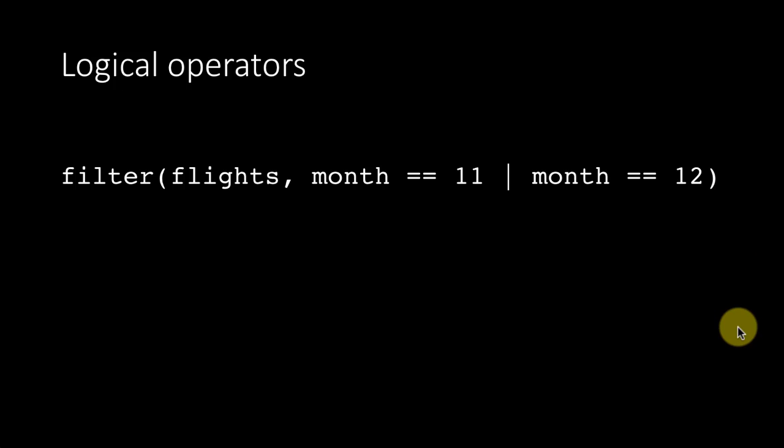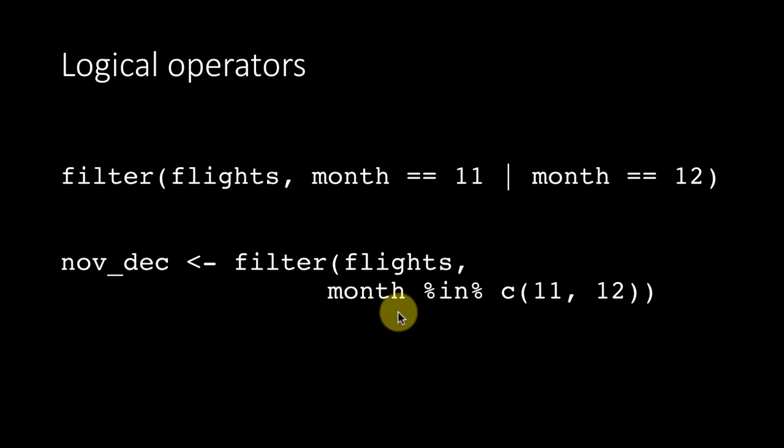There's also another way to say this. You can say filter flights, month percent in percent. That's a new operator: percent in percent, that month belongs to this set or this vector, 11, 12. Both of these will produce the results we want.